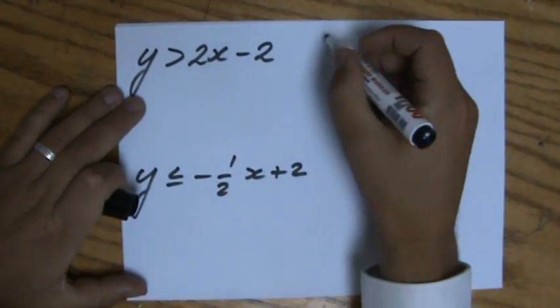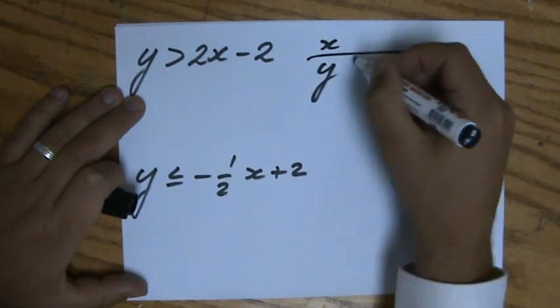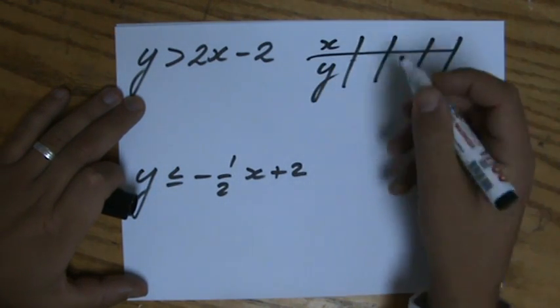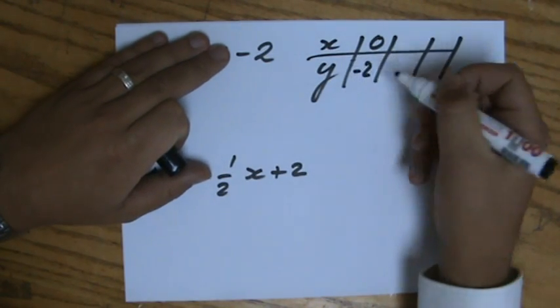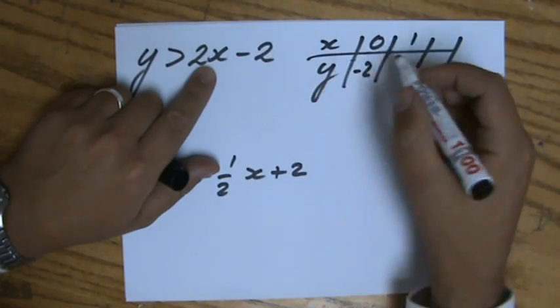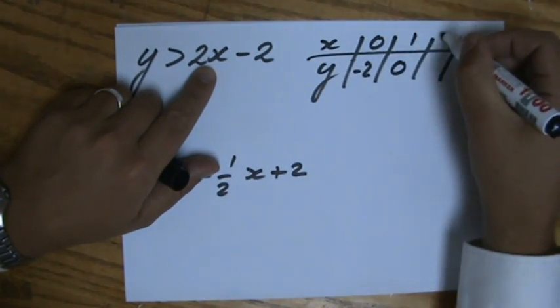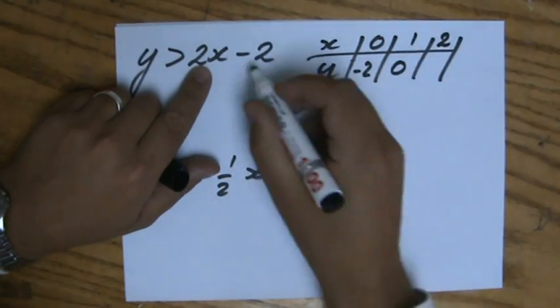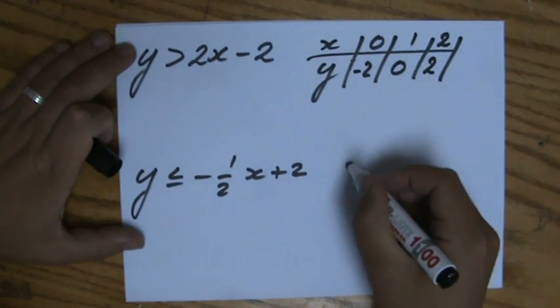I'm going to make a table of values relatively quickly. Choose three values for x: when x is 0, y is -2; when x is 1, 2 times 1 is 2, minus 2 is 0; and when x is 2, 2 times 2 is 4, minus 2 is 2.